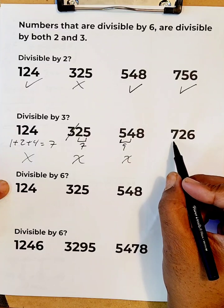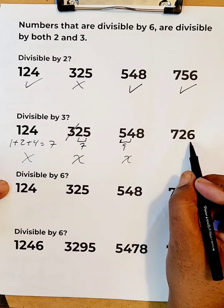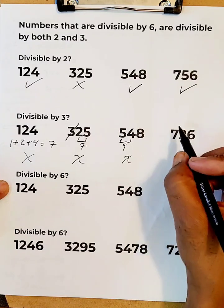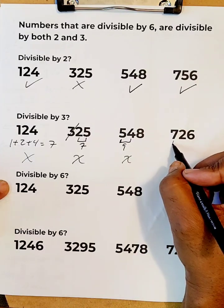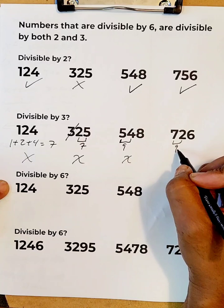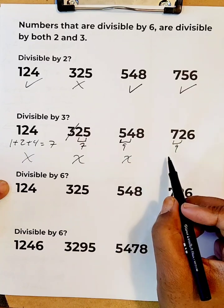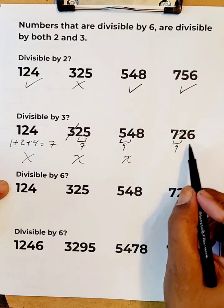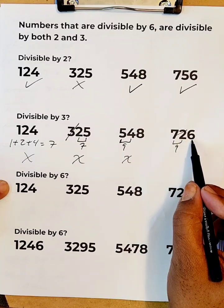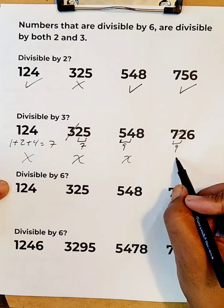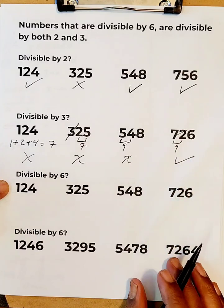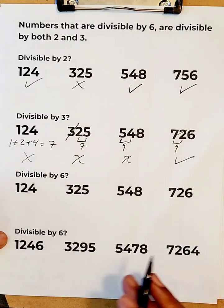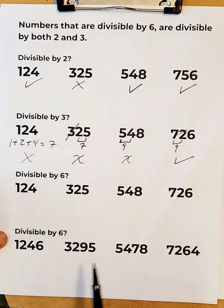For 756, if we add 7 and 6 we get 9, and the 5 is also divisible by three — wait, for 726, adding 7 and 6 gives 9, and the 2 in between also pairs up, so this number is divisible by three.